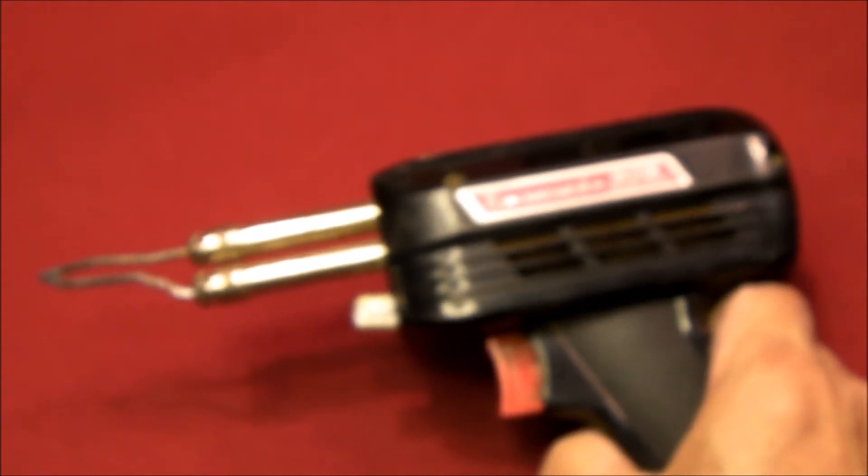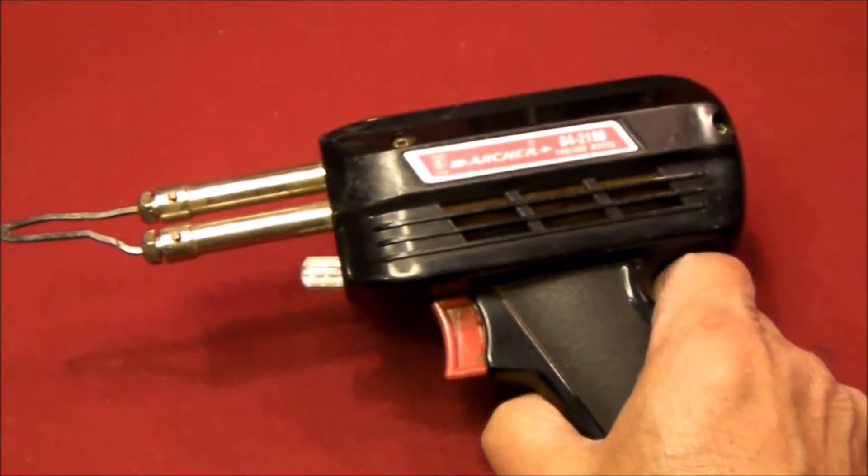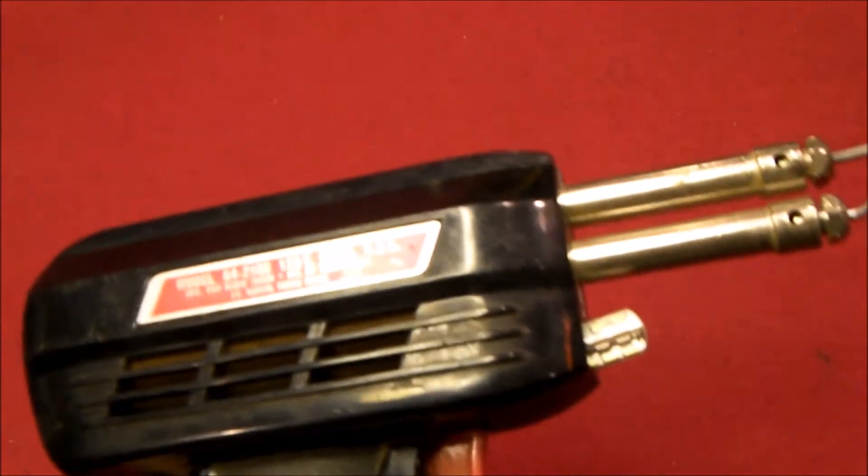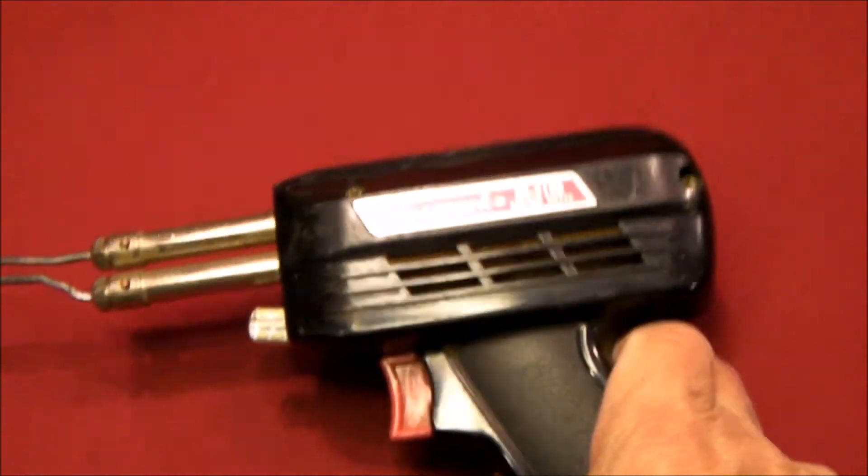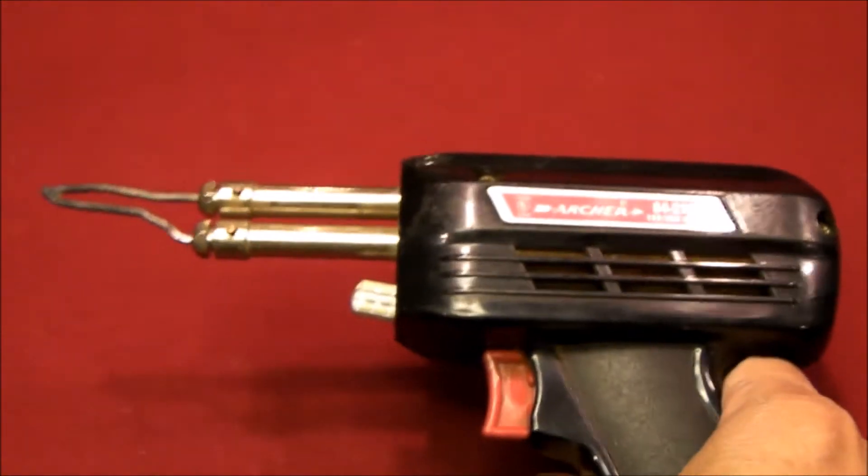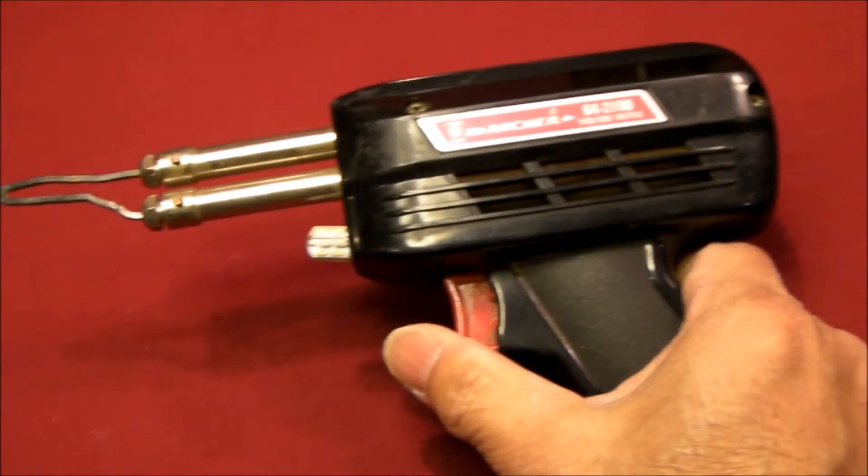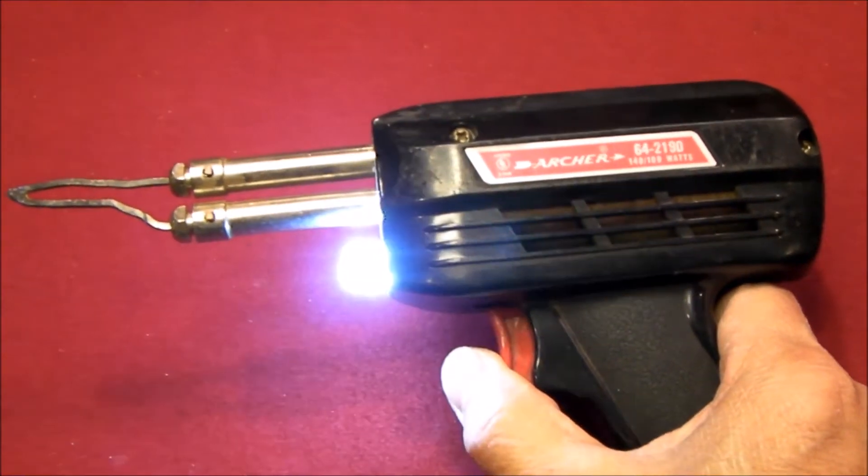Inside these soldering guns, they're all pretty much the same. I'm pretty sure even though this says Radio Shack or Archer, I'm pretty sure this is a Weller gun, just based on the switch and all the internal guts. They all look like the Wellers that I have.